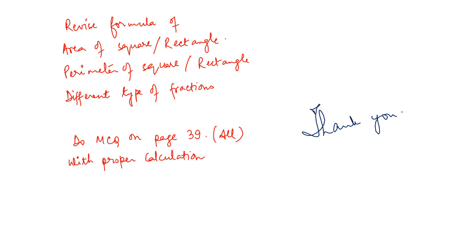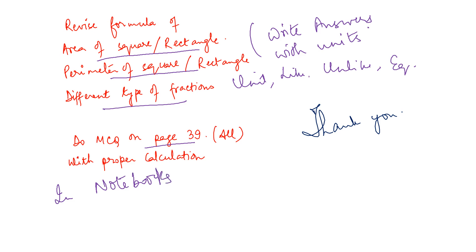So now what all things you have to revise for your upcoming exam? Revise the formula. The formula for the area of the square and rectangle and perimeter of square and rectangle, and please write answers with proper units. You are not in the habit with units, and then different kind of fractions you have to revise like unit, like, unlike, how to find equivalent and how to check whether two fractions are equivalent or not. Now your today's work will be to do the MCQs given on page number 39 and please do in your notebooks with all the calculations. Simply ticking in the book will not help you my dear students. Please practice.